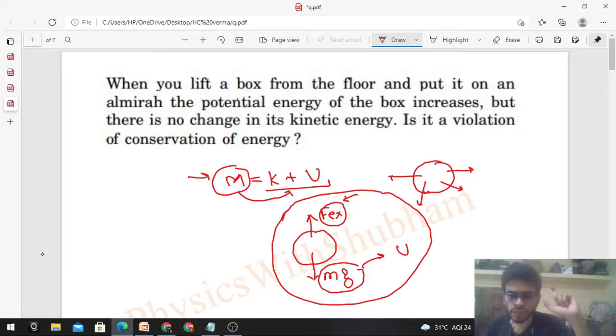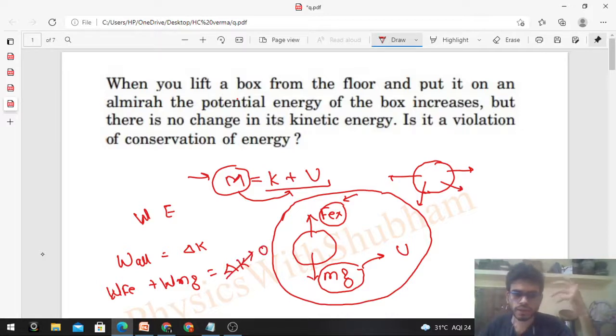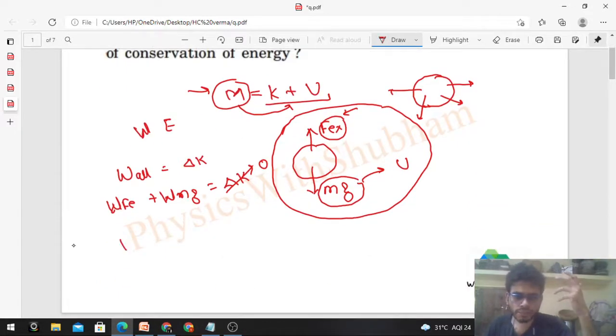Rather, use the work-energy theorem here. Work-energy theorem says work done by all the forces should be equal to change in kinetic energy. So here, how many forces are acting? Two. So work done by F external plus work done by mg should be equal to change in kinetic energy.